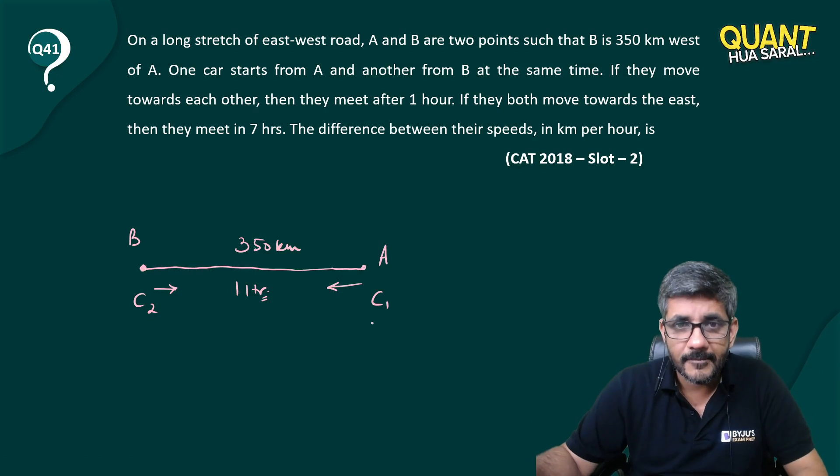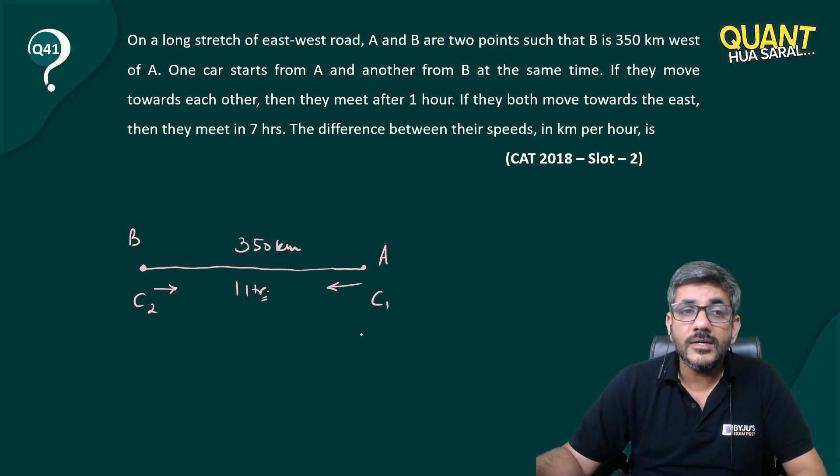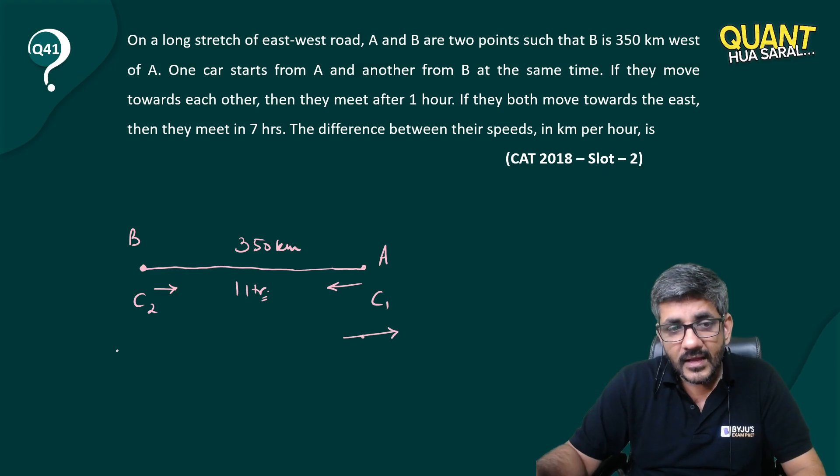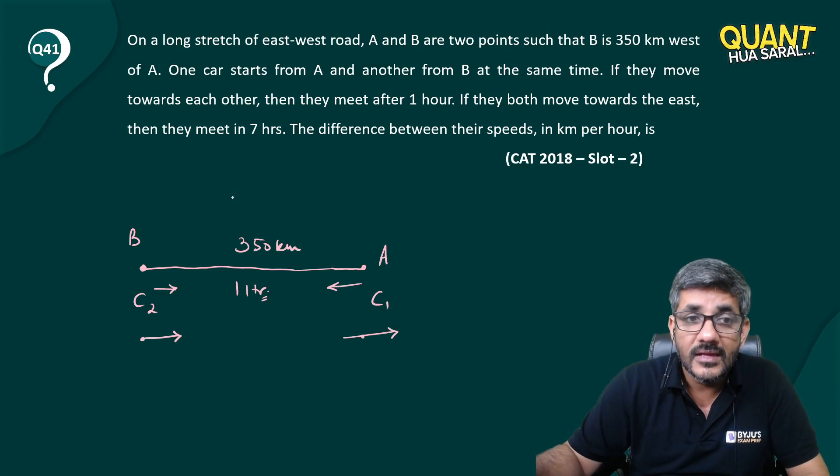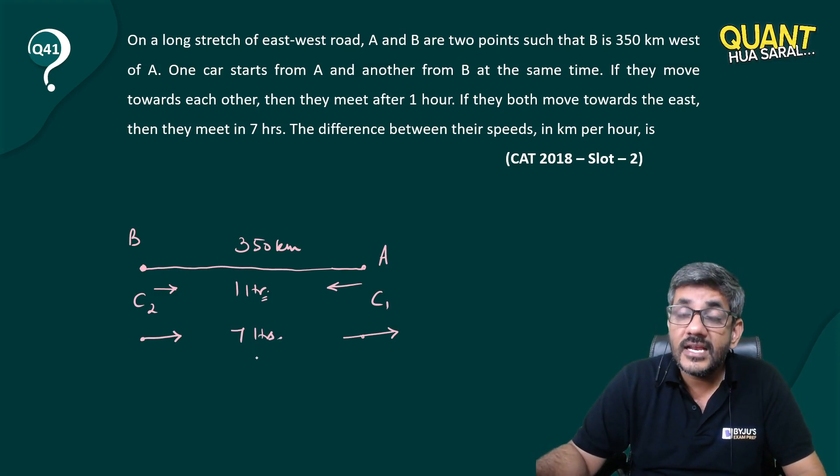If they both move towards east, that means this car is moving towards east and that car is also moving towards east. So they both are moving in the same direction, then they meet after seven hours. So can I say in this case the relative speed is 50 kilometers per hour?